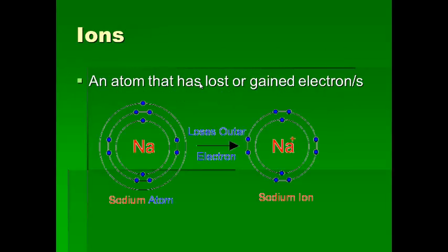Before we get into bonding, we need to know about ions. If you want to get eight electrons you do it one of two ways: either you lose one because you have an extra, or you gain one because you only have seven. In the case of sodium, it has all its inner shells filled but its outer shell has just one electron, and it's a lot easier to lose that one than to gain seven — so it loses its outer electron to become a stable sodium ion ready to bond.